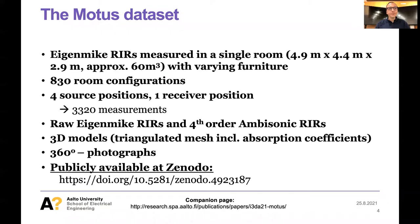The MOTUS dataset used an eigenmic to record room impulse responses in a single room. The dimensions of the room were 4.9 meters by 4.4 meters by 2.9 meters, approximately 60 cubic meters, and in the room we varied the furniture. We have 830 unique room configurations, where each configuration refers to the unique combination of furniture quantity, position, and orientation. Every room configuration was measured with four different source positions and one receiver, giving 3320 measurements in total.